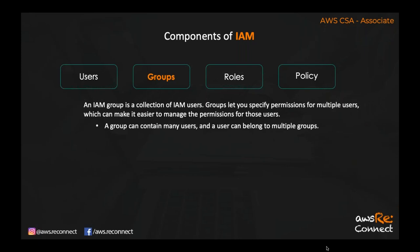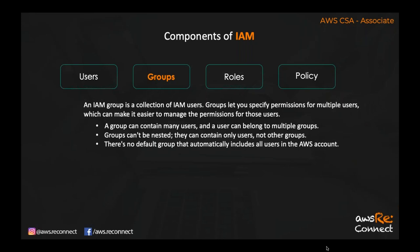Whatever permissions you add or revoke at the group level will be applicable to all users in that group. A group can contain many users, and a user can belong to multiple groups — for example, a user can be part of both a Developer group and an Admin group. Groups can only contain users, not other groups. There is no default group available, and the maximum number of groups you can create is 500, with a limit of around 15 policies per group.